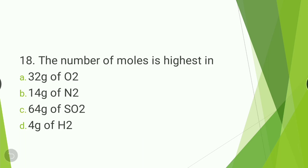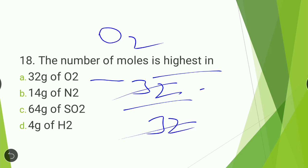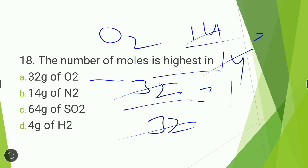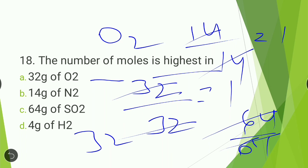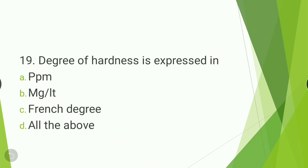Next question: in which of the following is the number of moles highest? For 32g of S: 32/32 = 1 mole. For 14g of N2: 14/14 = 1 mole. For 64g of SO2: 64/64 = 1 mole. For 4g of H2: 4/2 = 2 moles. So four grams of H2 consists of the highest number of moles — option D is the correct answer.